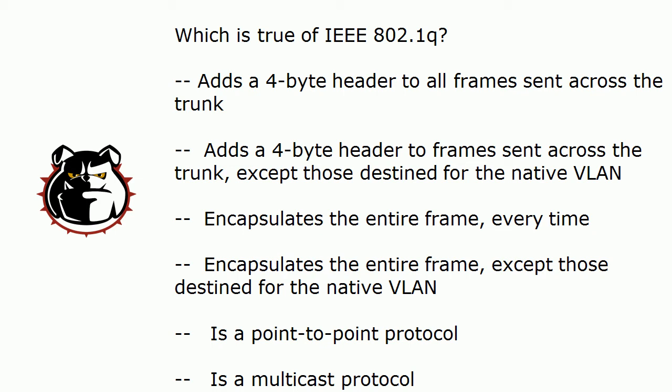So if you want to pause the video, go ahead, but we're going to go from top to bottom and discuss .1Q for a minute. One of the great things about .1Q is that it does not encapsulate the entire frame, because that is a lot of overhead — a lot of work for the transmitting switch, it takes up extra bandwidth, and it's got to be totally unpackaged at the other end. What .1Q actually does is it adds a four-byte header to frames sent across the trunk except those destined for the native VLAN.